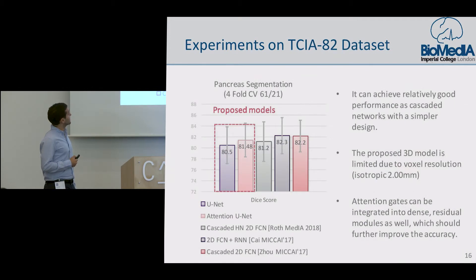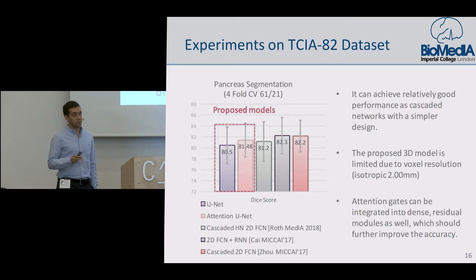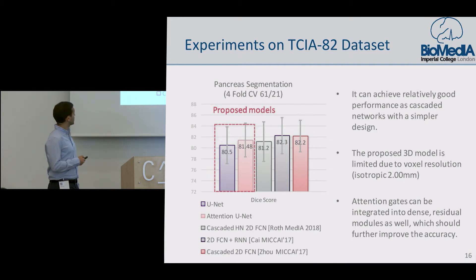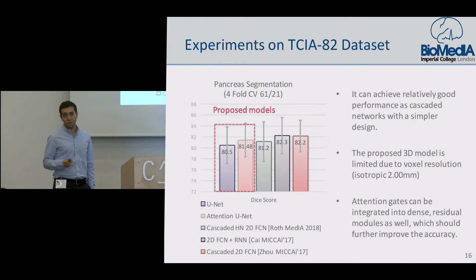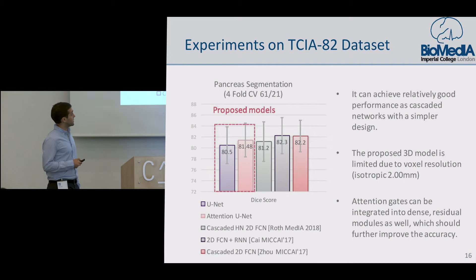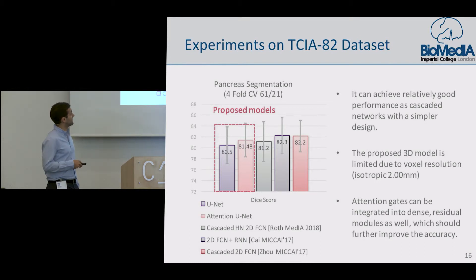In the second experiment, we focused on how this single model compares to cascaded approaches. The first two bars correspond to our experimental results, and we see that even using a single model, we can achieve results comparable to the cascaded approaches. Our models are actually limited by pixel resolution because we used 3D networks, and in the future we believe that with larger memory, we can achieve better and better results.